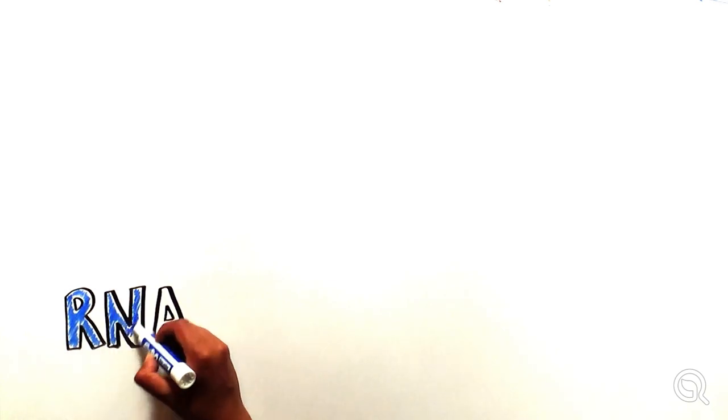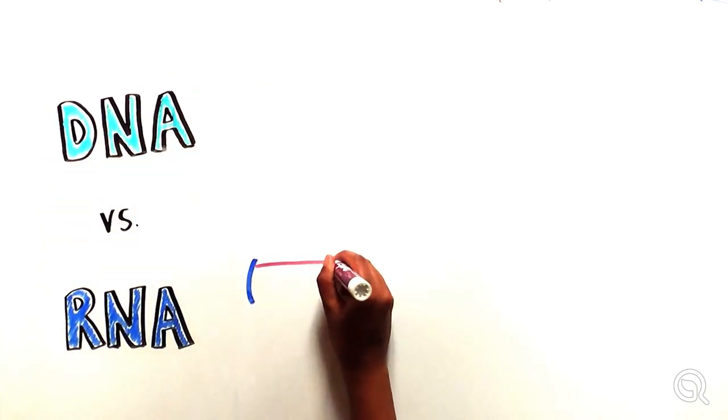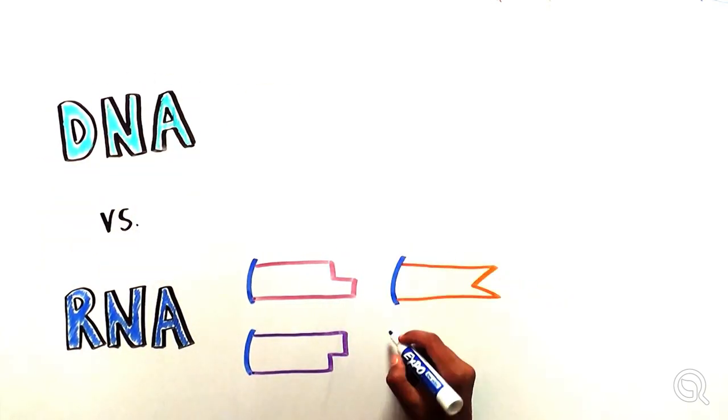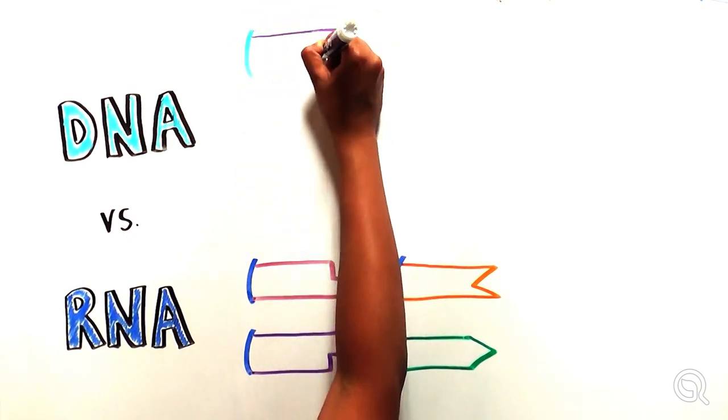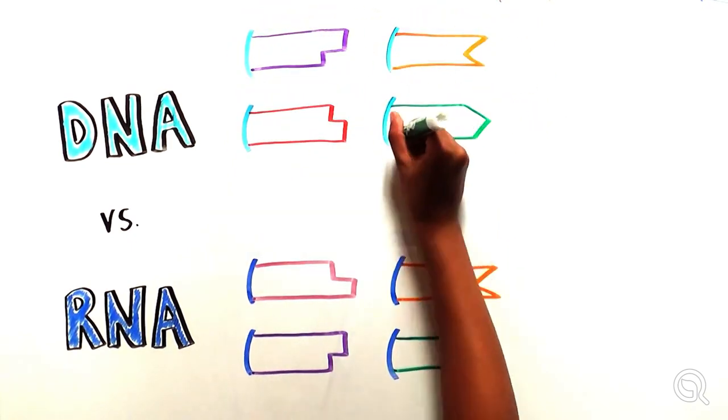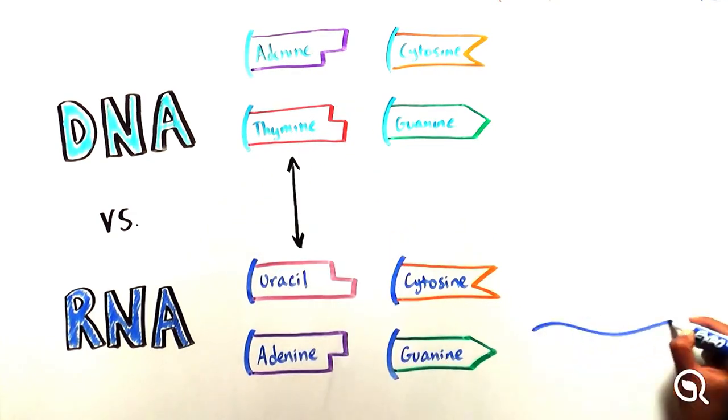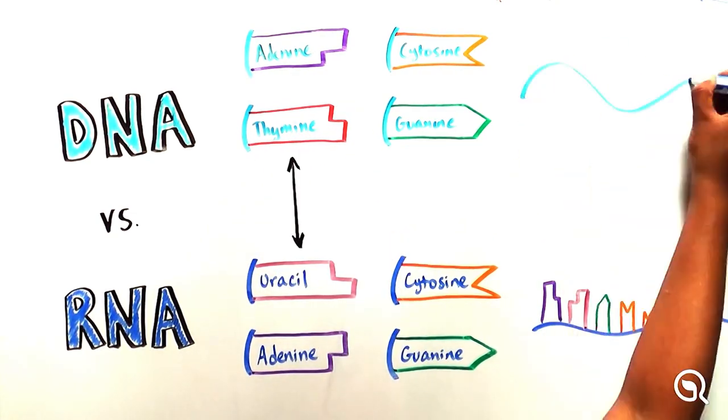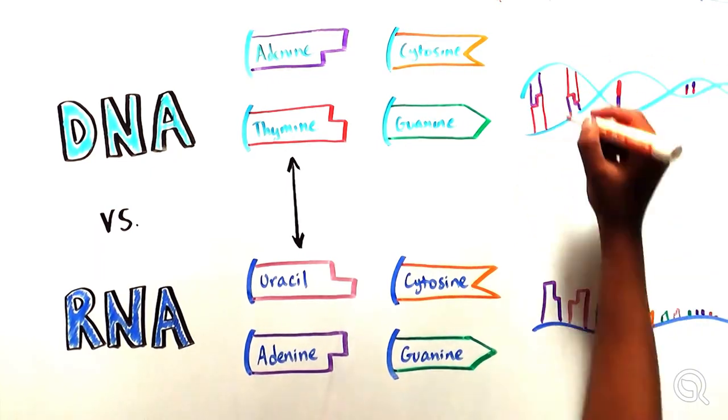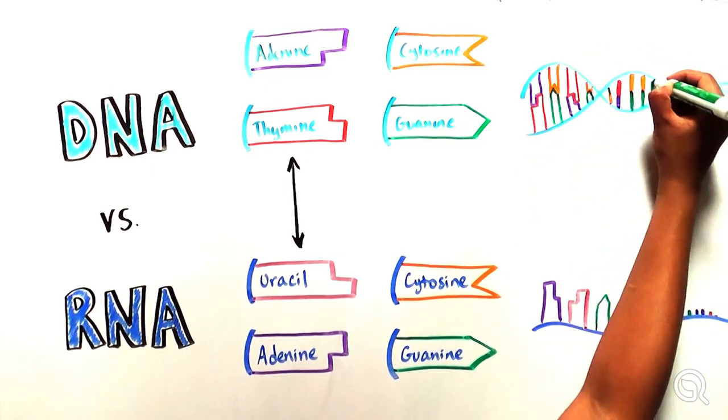RNA is similar to its better-known cousin, DNA, except for one nucleotide base, which are the chemical units that make up both DNA and RNA. RNA uses the nucleotide uracil instead of thymine, which is found in DNA. RNA is also usually single-stranded, unlike DNA, which is normally double-stranded.